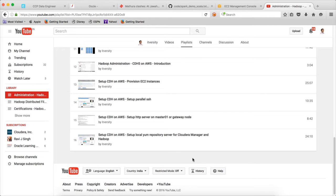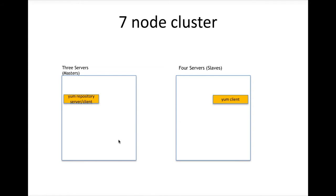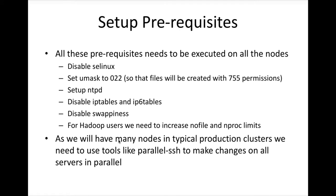So what are the prerequisites which we need to set up on all the nodes? We need to disable SELinux, we have to set UMASK to 022, we have to set up NTPD, we have to disable IP tables and IP6 tables, we have to disable swappiness, and we might have to create some Hadoop users and increase nofile and nproc limits, which are ulimits.